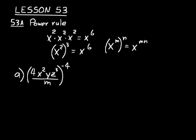We take that 4 and do 4 to the negative 4 power, because really it's 4 to the 1. So 1 times negative 4 is 4 to the negative 4. Then x to the negative 8 because 2 times negative 4 is negative 8. y to the negative 4 because y is really y to the 1. And z to the negative 12 over m — m to the 1 times negative 4 — so that would be m to the negative 4.